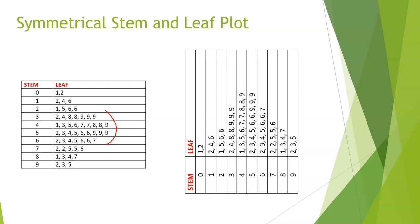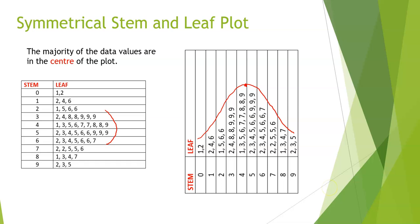If we rotate the stem and leaf plot 90 degrees anti-clockwise and look at it on its side, we can particularly see the symmetrical aspect. The peak of the data is right in the center, and the shape comes to a peak and then comes down — it is almost perfectly symmetrical. The majority of the data values are in the center, and the peak is in the center. This is what we call a symmetrical stem and leaf plot.